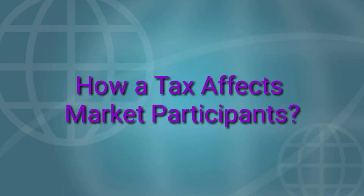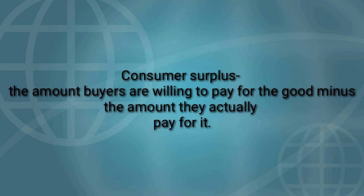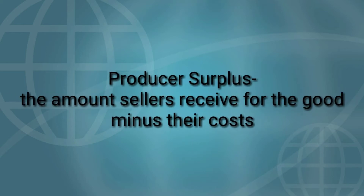How a tax affects market participants. Let's use the tools of welfare economics to measure the gains and losses from a tax on a good. To do this, we must take into account how the tax affects buyers, sellers, and the government. The benefit received by buyers in a market is measured by consumer surplus — the amount buyers are willing to pay for the good minus the amount they actually pay for it. The benefit received by sellers is measured by producer surplus — the amount sellers receive for the good minus their cost.